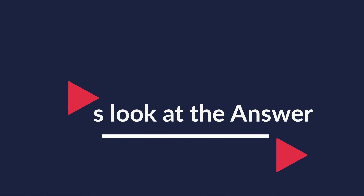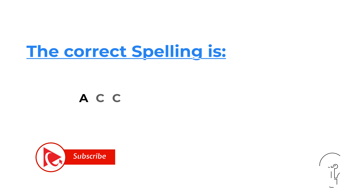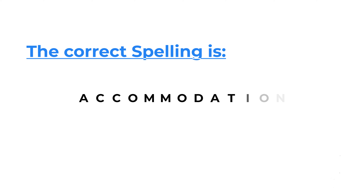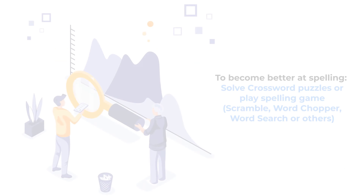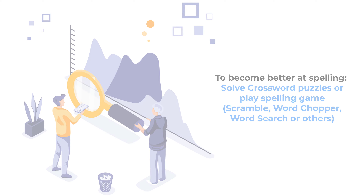The correct answer is choice B. The correct spelling for the word accommodation is A-C-C-O-M-M-O-D-A-T-I-O-N. Hopefully you nailed this question and now know how to answer similar problems on the test.